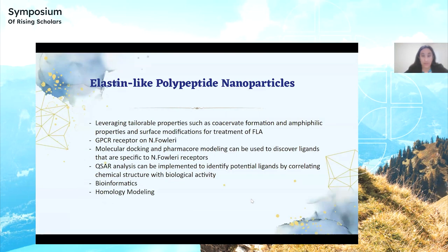I provided a description of how ELP nanoparticles could be tailored to these two specific conditions. For example, Naegleria fowleri, the pathogen causing Primary Amoebic Meningoencephalitis, contains the GPCR receptor. Several techniques such as molecular docking, bioinformatics, and QSAR analyses can be used to find specific ligands and surface modifications that could be made to ELP nanoparticles. These are very different from other nanoparticles because of their transition temperature and their ability to form coacervates around the therapeutic agents at that transition temperature.